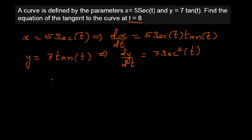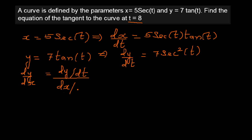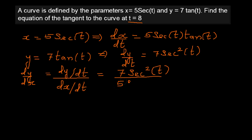Now we want to find dy/dx. We can say dy/dx is equal to dy/dt divided by dx/dt. Substituting: dy/dt is 7 sec squared t, divided by 5 sec t times tan t.